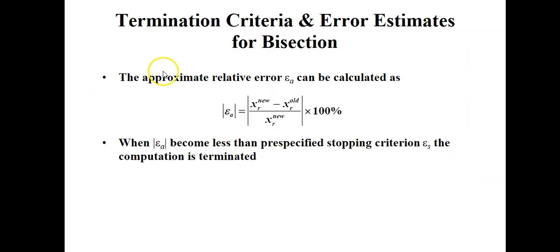If your f(xl) times f(xr) is not equal to zero, you need to move on with your iteration. But how many iterations that you have to do depends on the termination error estimates for bisection method.